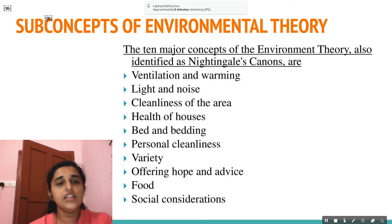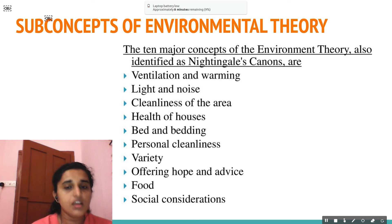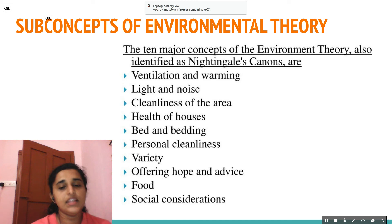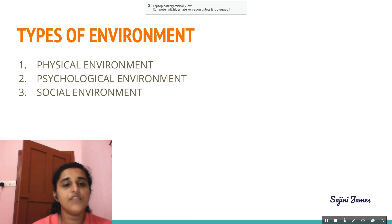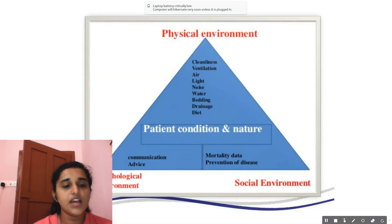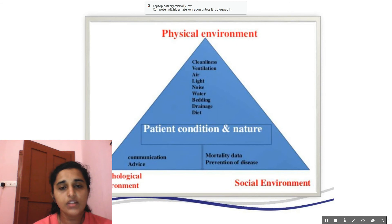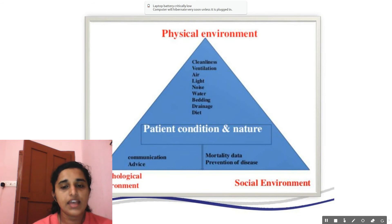So we have seen Nightingale's canons: ventilation and warming, light and noise, cleanliness of the area, health of houses, bed and bedding, personal cleanliness, variety, offering hope and advice, food, and social considerations. Nightingale mainly stressed three types of environment: physical environment, psychological environment, and social environment, which are mutually related. Physical environment covers the major components we discussed. Psychological environment includes especially communication with the patient and advice. By regulating these environmental factors, we aim to reduce mortality and prevent disease.